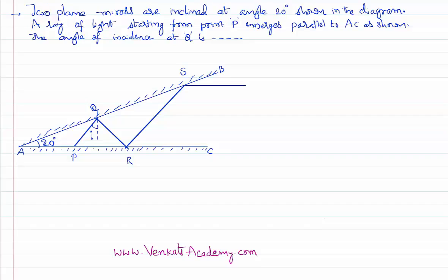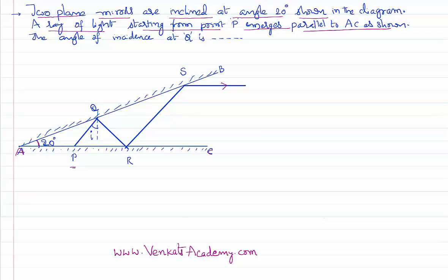Hello everyone, welcome to this video lesson. We are solving a problem from ray optics based on the topic of reflection. There are two plane mirrors inclined at an angle of 20 degrees. A ray of light starting from point P emerges parallel to AC, traveling from P to Q, Q to R, R to S, becoming parallel to the bottom plane mirror, which is AC.